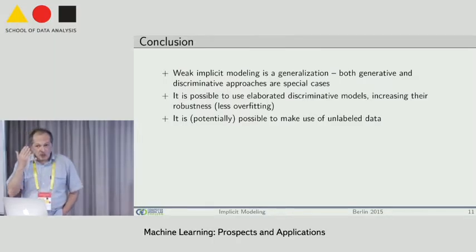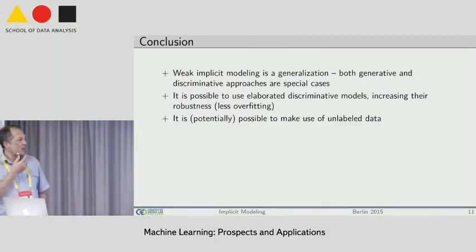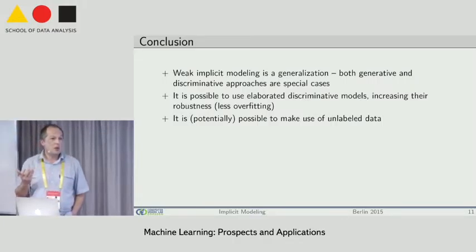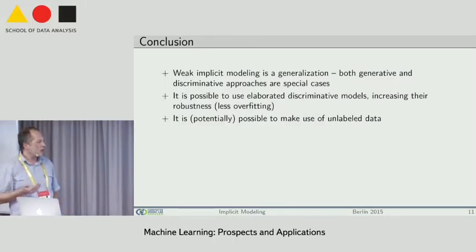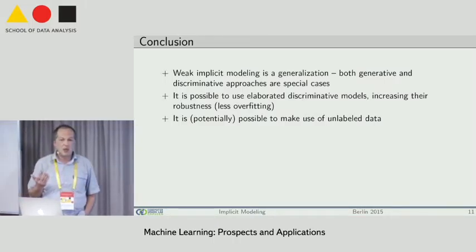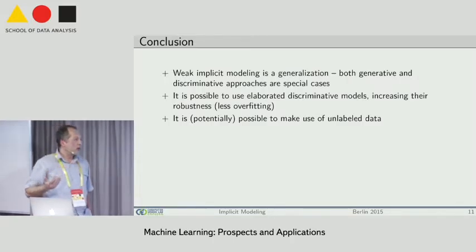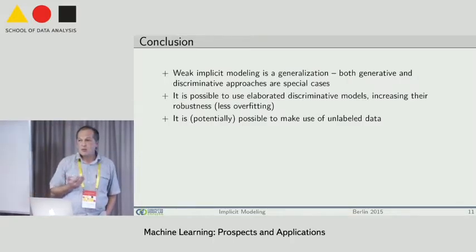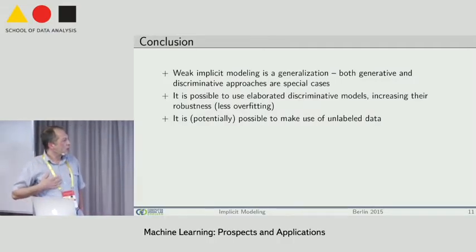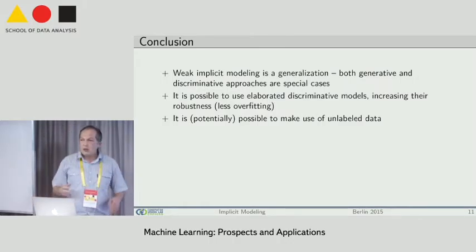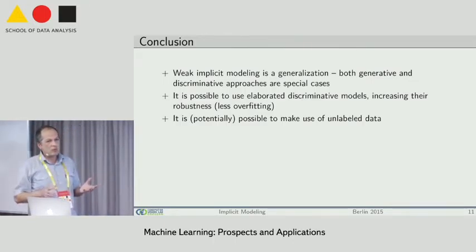Let me conclude. On the positive side: this implicit modeling approach is a generalization — the usual discriminative and generative models are special cases. We can combine advantages of both approaches, and hopefully do not combine their drawbacks as well. You can combine nearly any heterogeneous probability distributions — any prediction model with any forward model. That is very good news.